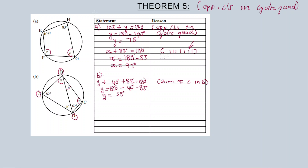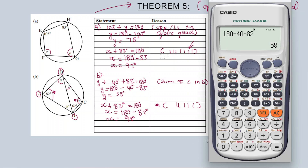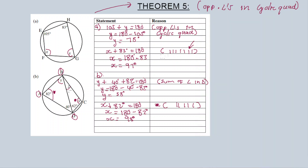Now we can apply Theorem Number Five to calculate x. The opposite angles sum to 180 degrees: 82 plus x equals 180 degrees. The reason is opposite angles in a cyclic quad are supplementary. So x equals 180 minus 82, which gives x equals 98 degrees.